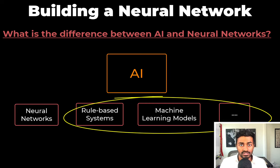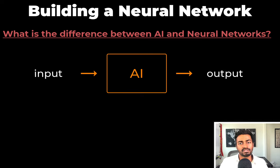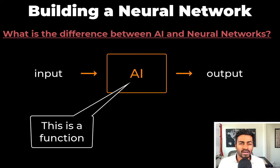Now other types of AI systems could be rule-based systems, machine learning models, among many others. But overall, these AI systems can take an input and return an output. So in a mathematical sense, AI systems are functions.